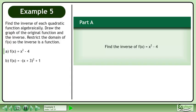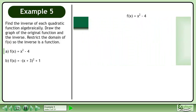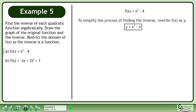In part a, we'll find the inverse of f equals x squared minus 4. To simplify the process of finding the inverse, we write f as y.